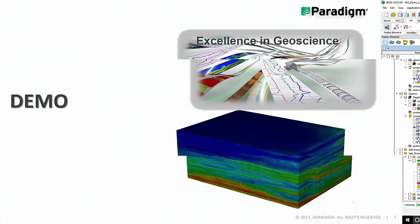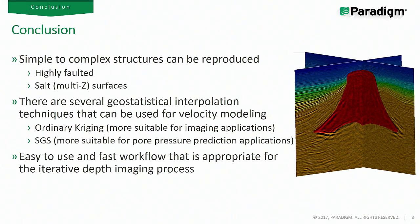In conclusion, two different cases were demonstrated — from simple to complex structures: one highly faulted structure and one multi-Z salt structure. SCUA GOCAD can capture any kind of structure, and several geostatistical interpolation techniques are available for different applications: ordinary kriging is more suitable for imaging applications, while SGS with secondary information may be more suitable for pore pressure prediction. These tools are easy to use and provide a relatively fast workflow to quickly build velocity models that are more representative of your geological interpretations.